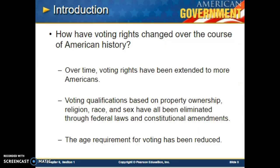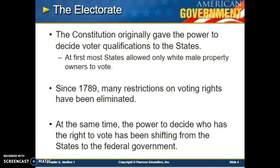So, introduction for Section 1: the right to vote. How have voting rights changed over the course of American history? Over time, voting rights have been expanded to more Americans — including women with the 19th Amendment and African Americans as well. Voting qualifications based on property ownership, religion, race, and sex have all been eliminated through federal laws and constitutional amendments. The 15th Amendment gave African Americans the right to vote. The 26th Amendment reduced the voting age from 21 to 18 — because men were old enough to be drafted at 18, they advocated that if they're old enough to fight, they're old enough to vote. The electorate is the group of people that can vote, and that number has expanded over time.